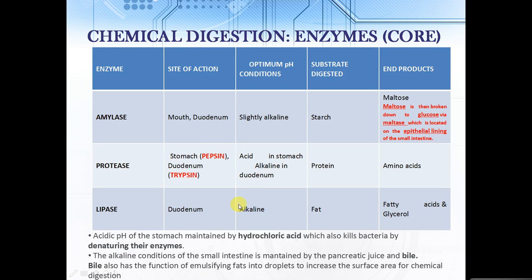In the duodenum, enzymes normally have an optimum pH of alkaline conditions, and that is maintained by both the pancreatic juice and the bile. Bile has a function of emulsifying fats into droplets, which increase the surface area for chemical digestion of fats and lipids.